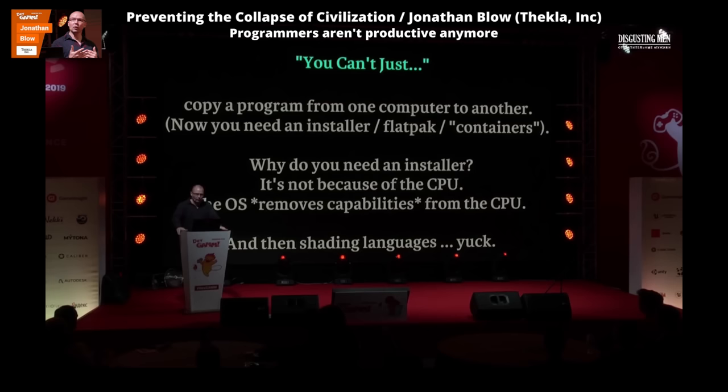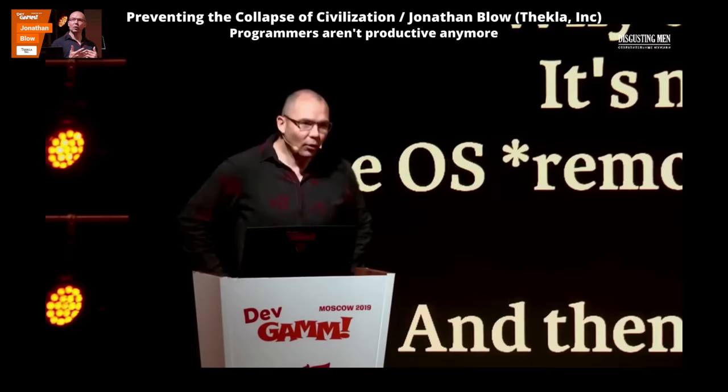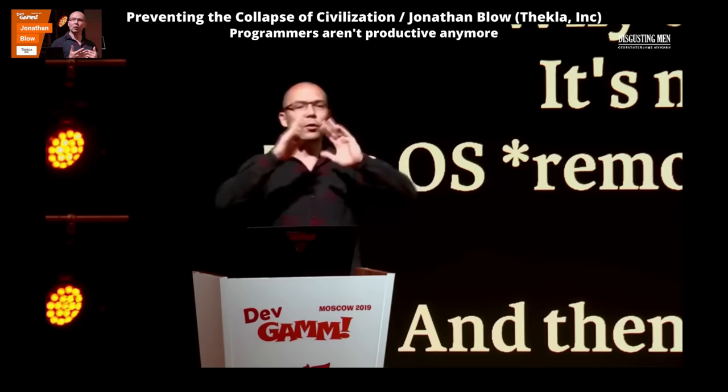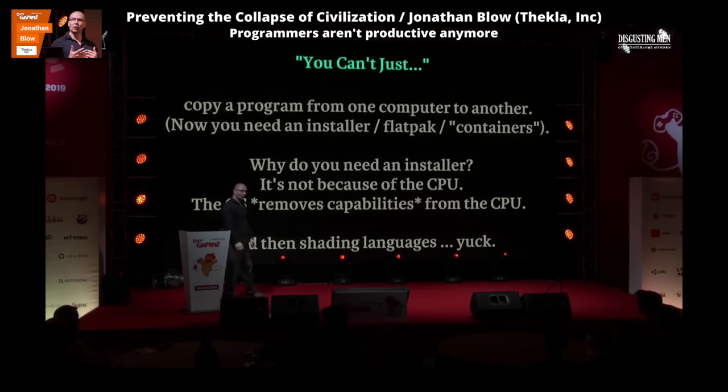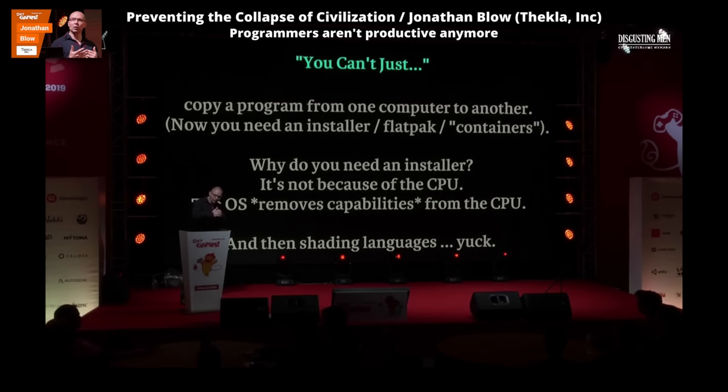Why do you need an installer to install software? Is it because of the CPU? Not really. Imagine you have some x64 machine code — you got it into a computer's memory and you just jump to it, set the program counter to that code. That code is going to do the same thing on a Windows PC as it does on a Mac, as it does on a Linux machine, as it does on an Xbox, as it does on a PlayStation 4 — because all of those systems use compatible CPUs. So what's the installer for? The installer is to get around the incompatibilities that we added at the OS layer, which is this immensely complex thing that we mostly don't want, actually. We tend to think about operating systems as adding capabilities, but they also remove capabilities like compatibility.